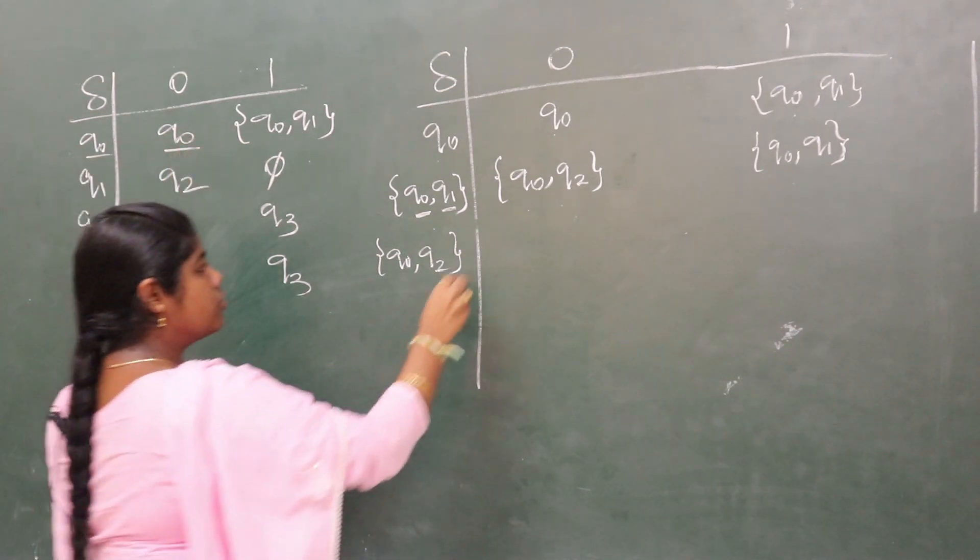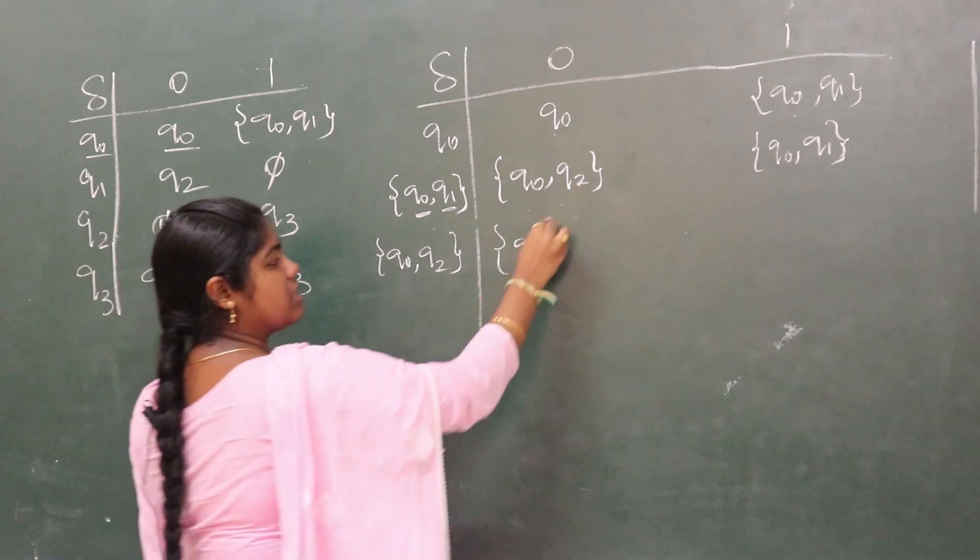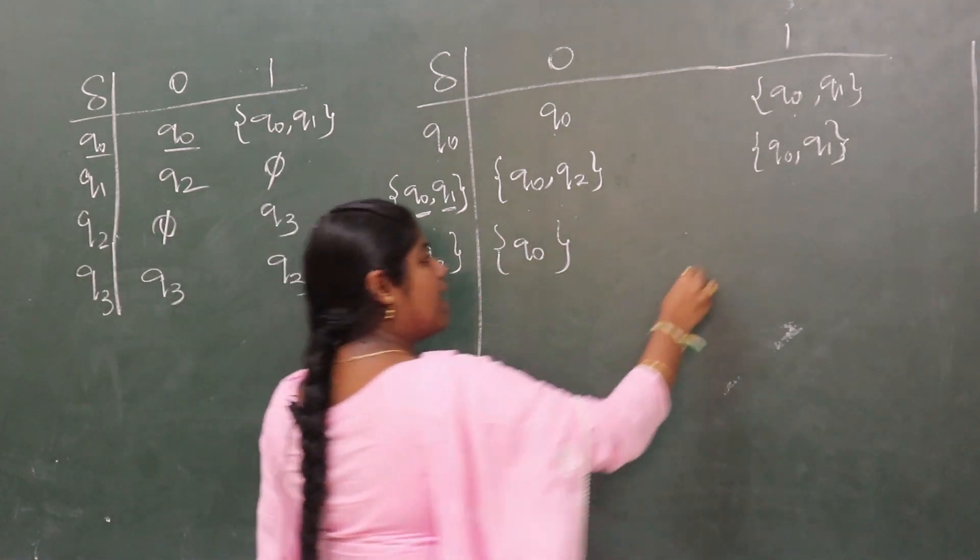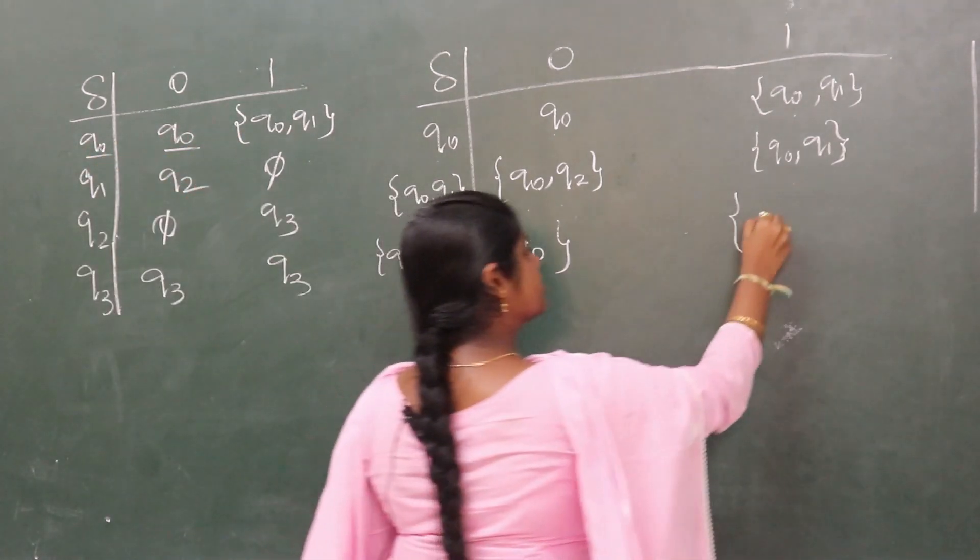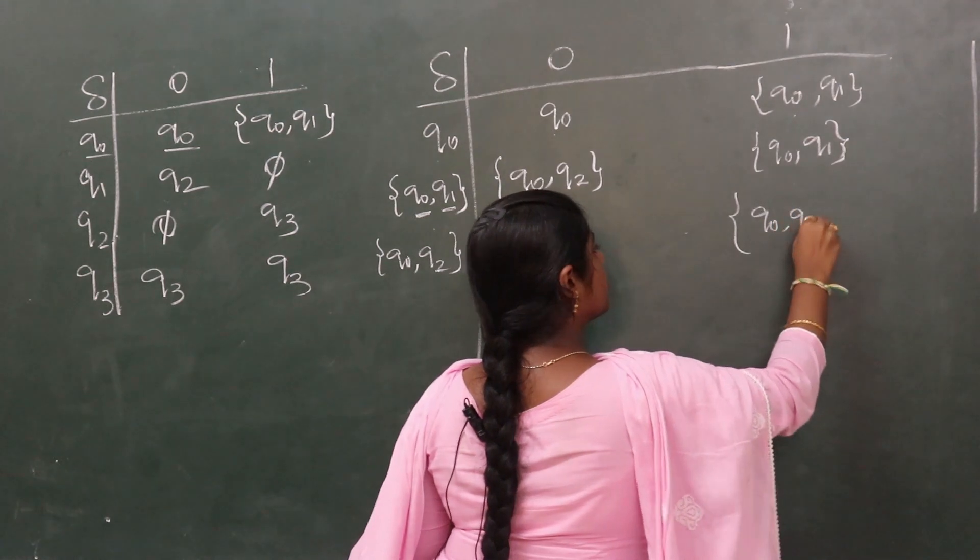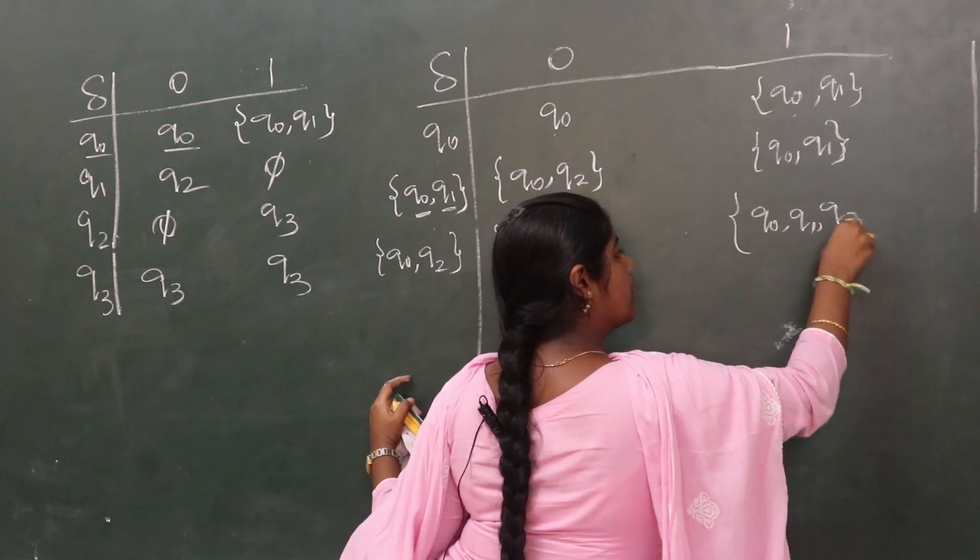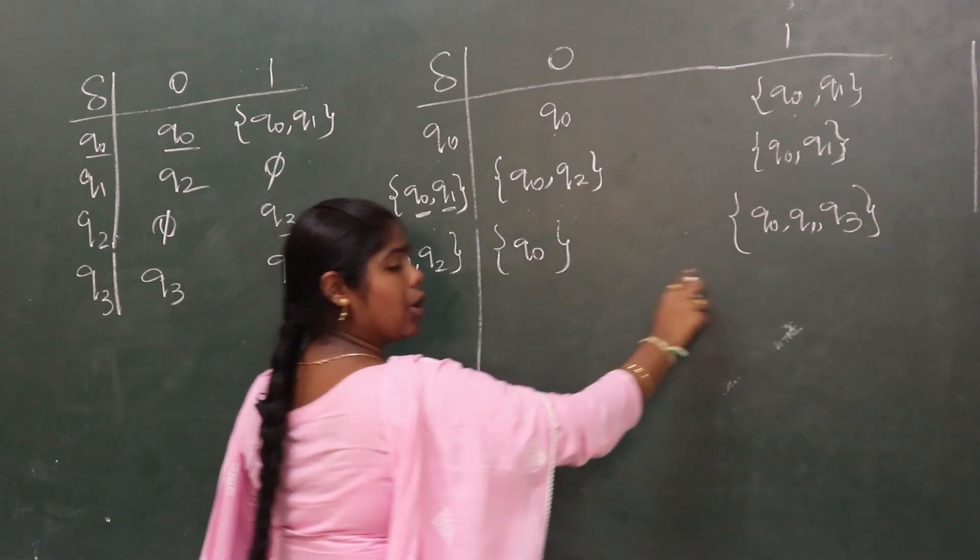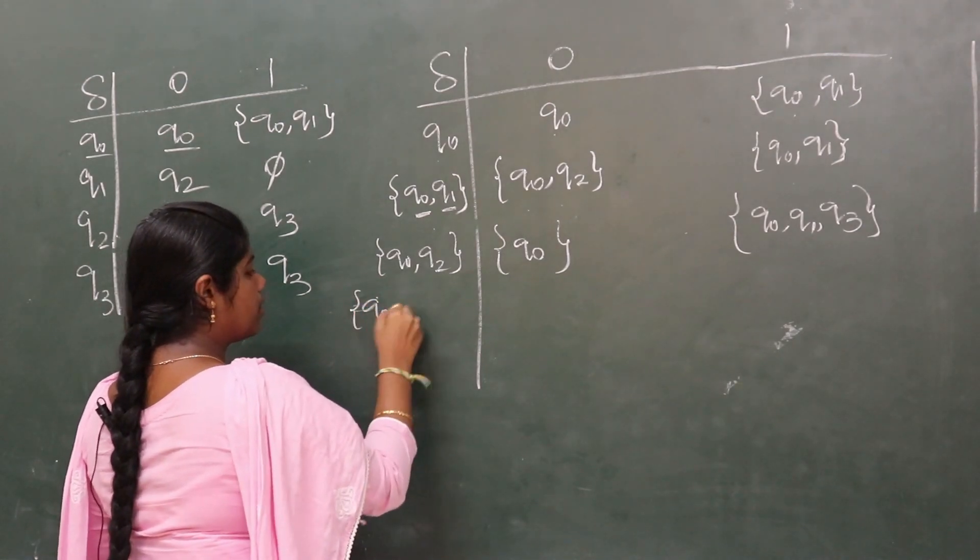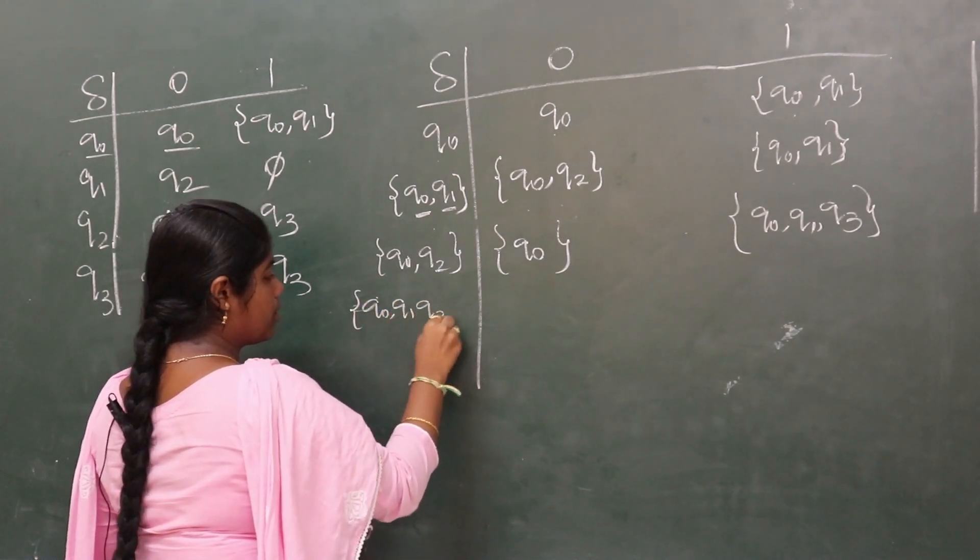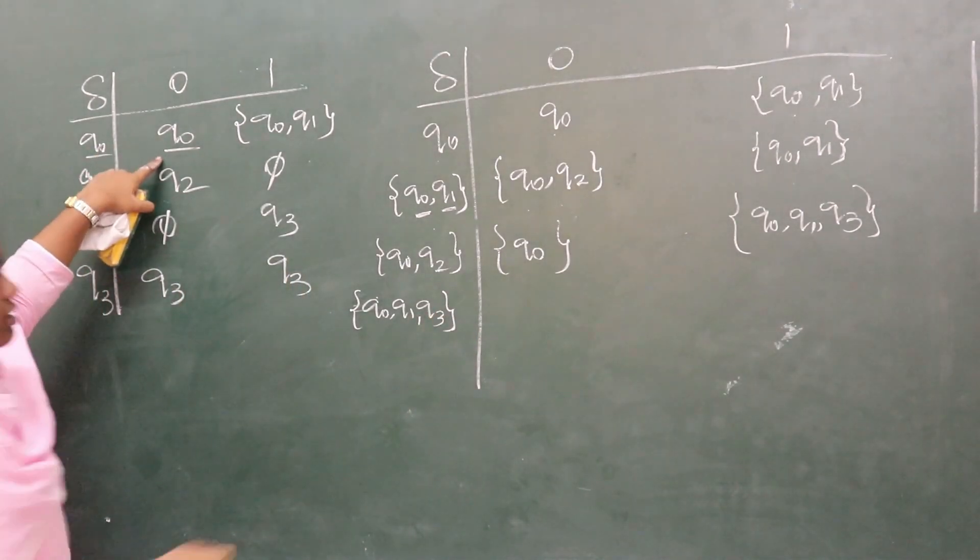Therefore, for q0, q2, we need to check where the transition goes. q0 on 0 goes to q0, q2 on 0 is null, therefore this state ends with q0. Similarly, for 1, where does the transition go? q0 on 1 goes to q0, q1. q2 on 1 goes to q3.